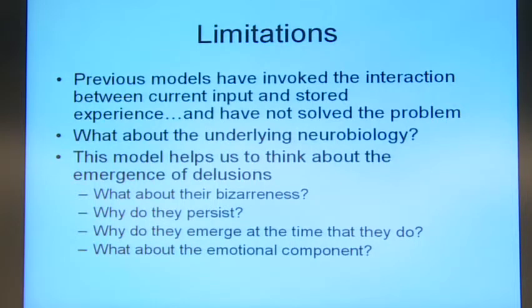Why do delusions persist even in the face of apparently contradictory evidence? I think one answer to that is that, having said that an inference is a perception, once the belief forms, then the evidence is maybe disregarded more easily and is indeed changed in the way it's perceived. Why do they emerge at the time they do? Nobody's really explained why schizophrenia tends to occur in late adolescence, and how would this model fit with that?